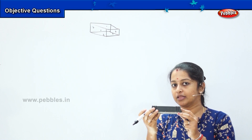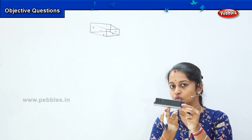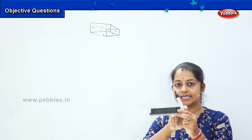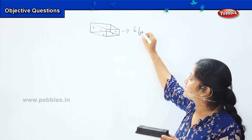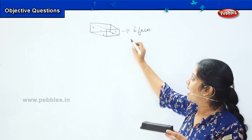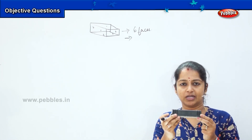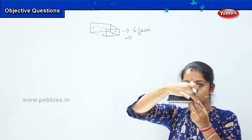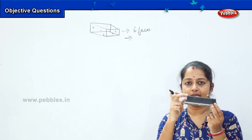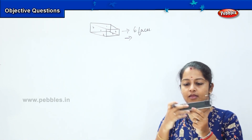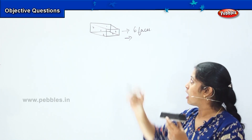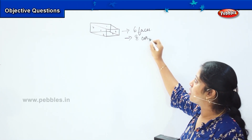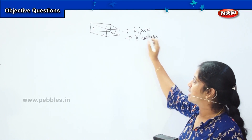So, how many faces are there in the cuboid? 1, 2, 3, 4, 5 and 6. A cuboid has got 6 faces. And how many corners does it have? Shall we count? 1, 2, 3, 4, 5, 6, 7 and 8. So, a cuboid has 8 corners and 6 faces.